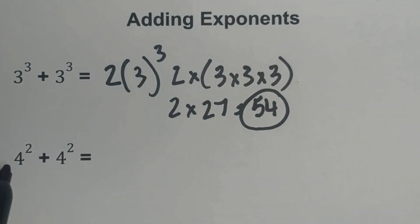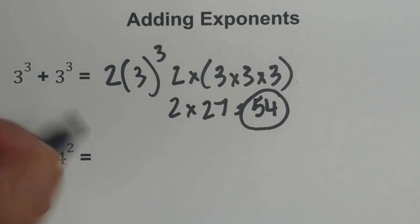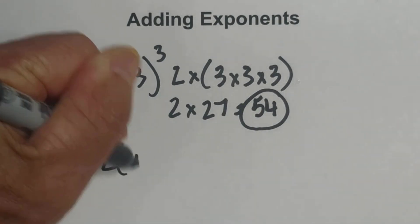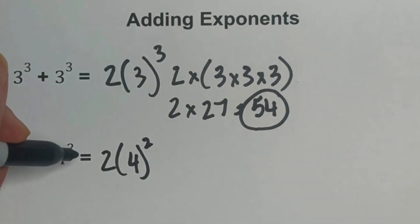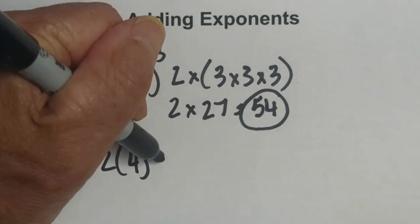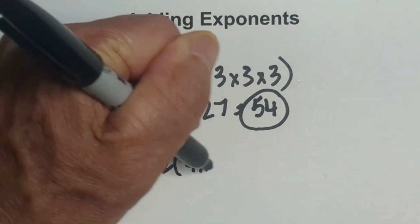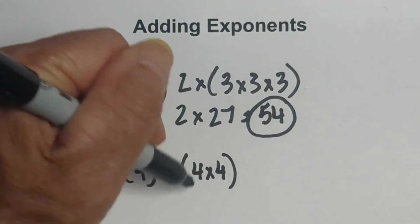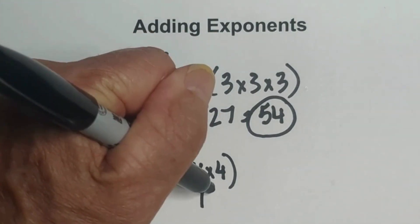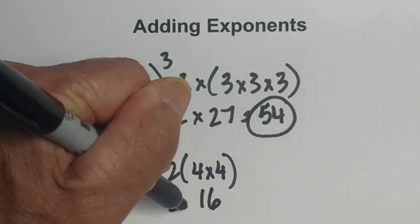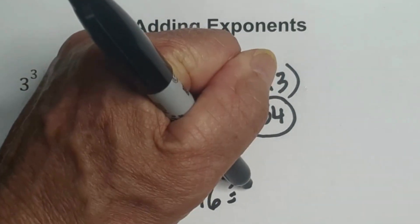Let's look at the second one. Same thing — same bases, same exponents. We'll go 2 times 4 squared, which is 2 times, in parentheses, 4 times 4. 4 times 4 is 16, then 2 times 16 equals 32.